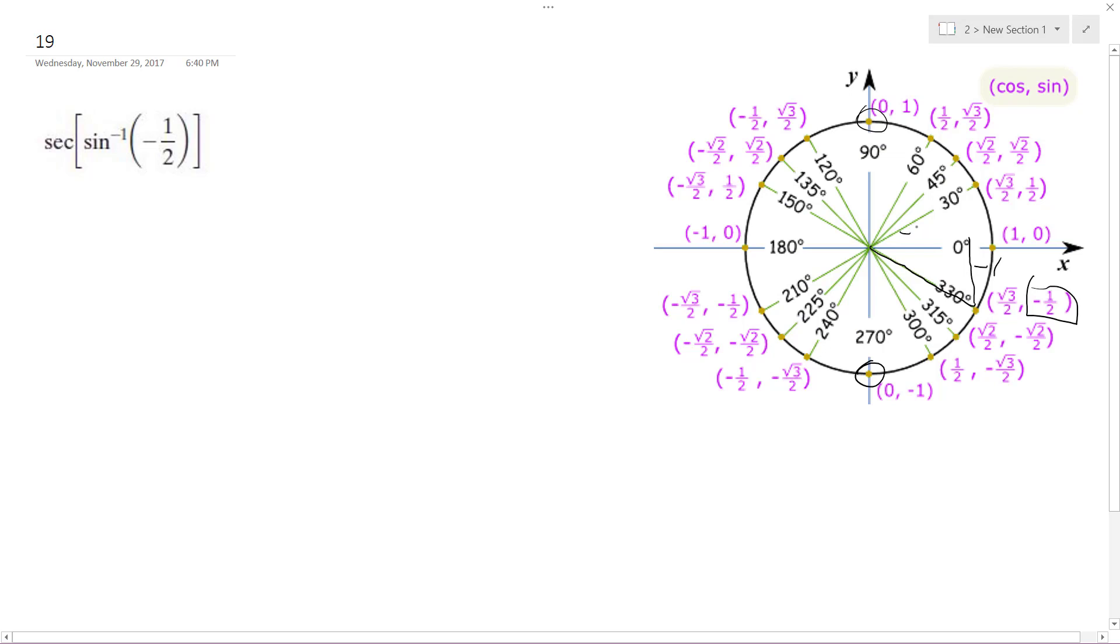That's root three. This doesn't matter, but I'm just labeling the triangle. It's a 30-60-90 triangle. So this is negative pi over six.